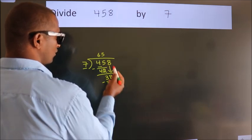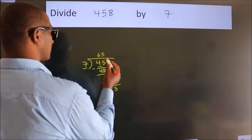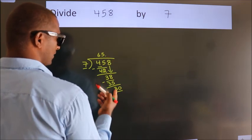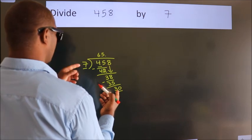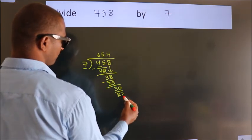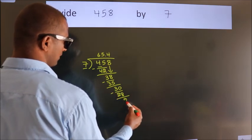After this, no more numbers to bring it down. So what we do is, we put a dot and take 0. So, 30. A number close to 30 in the 7 table is 7×4=28. Now we subtract. We get 2.